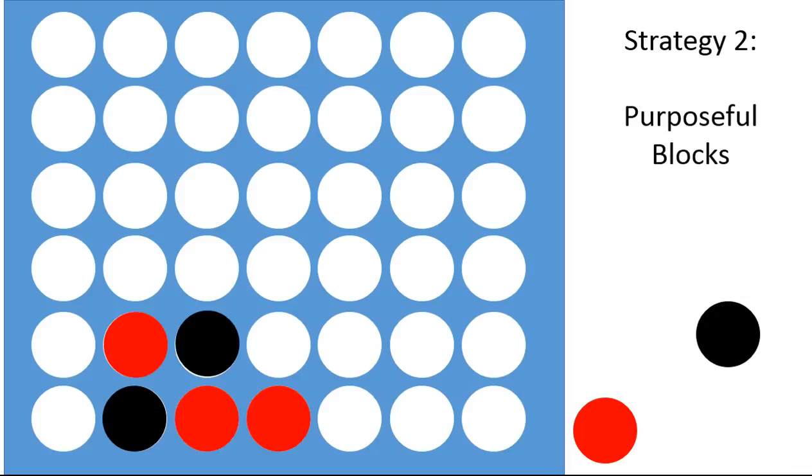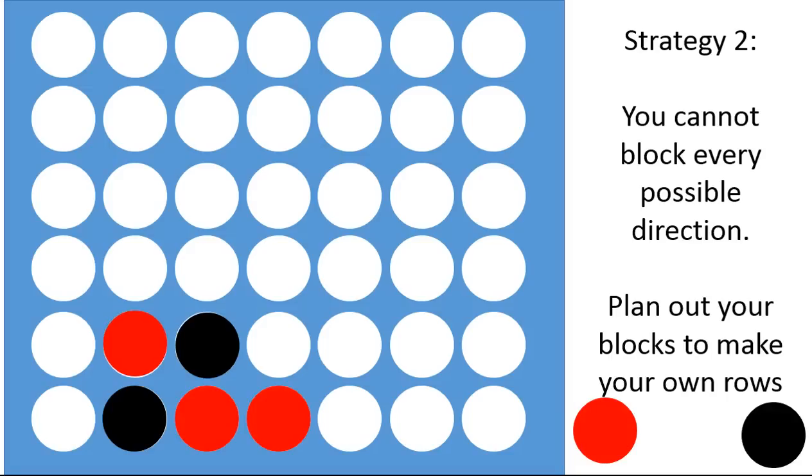Strategy number two, purposefully block. So when you're blocking your opponent, you can't possibly block every direction your opponent can go. So you want to plan out your blocks so that they help you make your own rows.